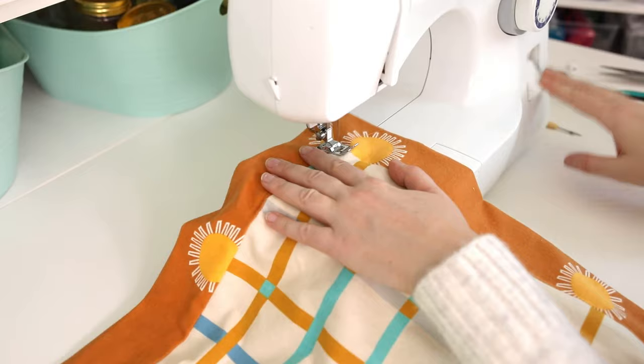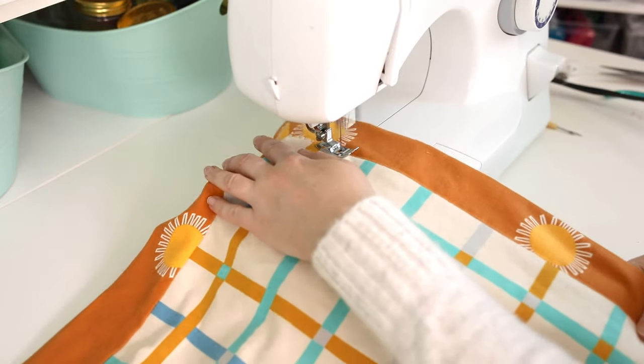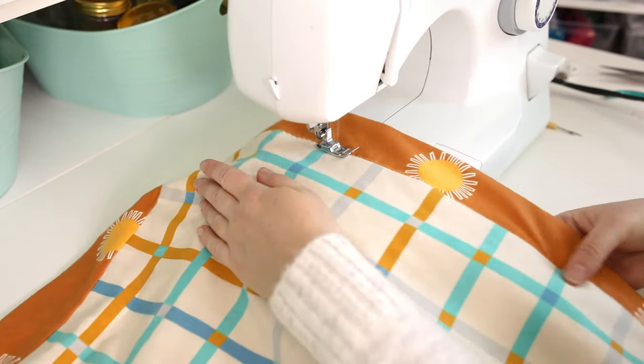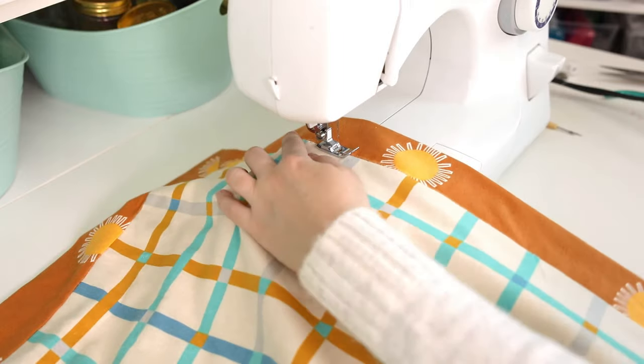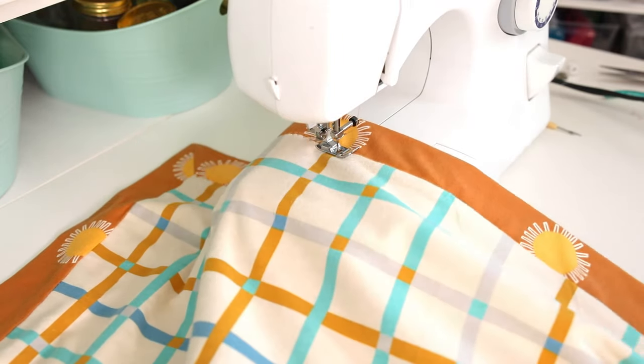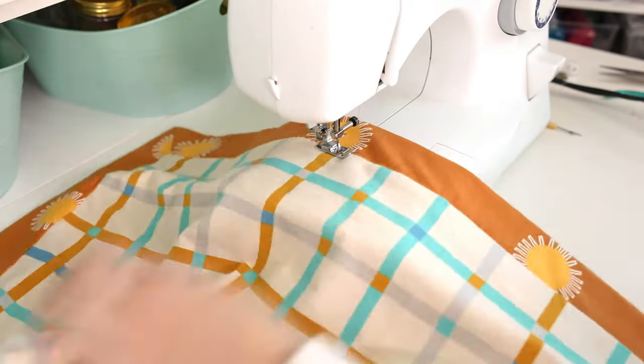One last step, once everything is really smooth, sew around the entire blanket with a zigzag stitch centering it right over that seam between the two fabrics. This keeps the blanket in place and it closes the hole you used to turn the blanket.